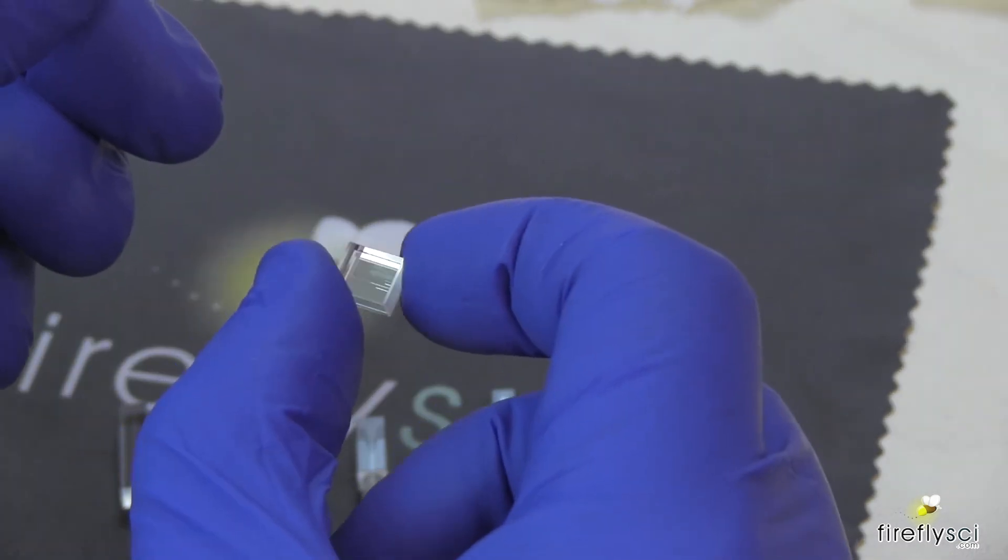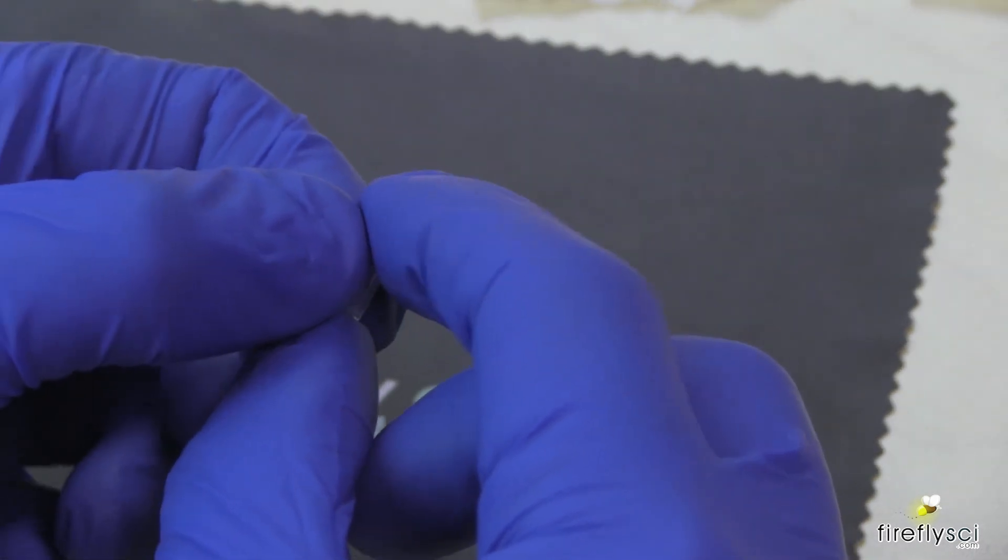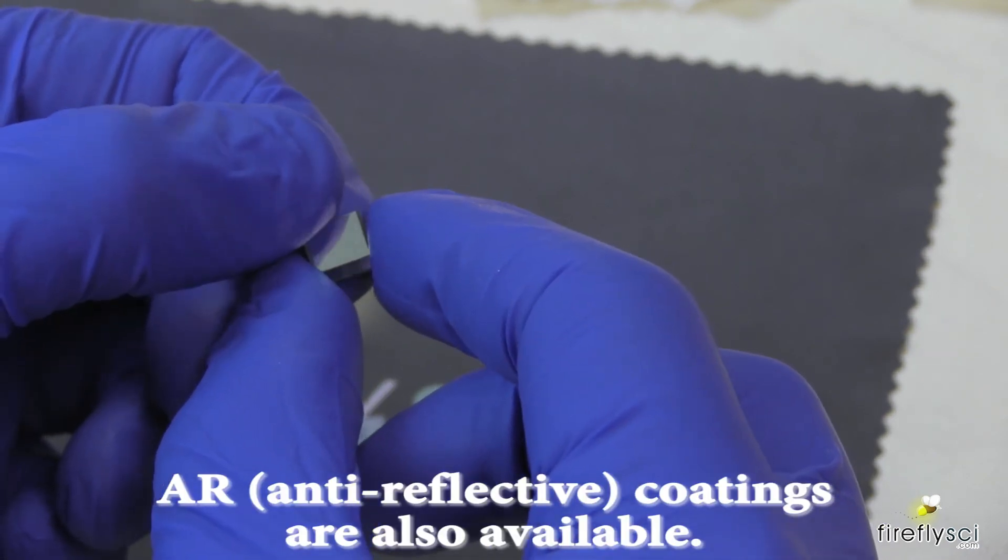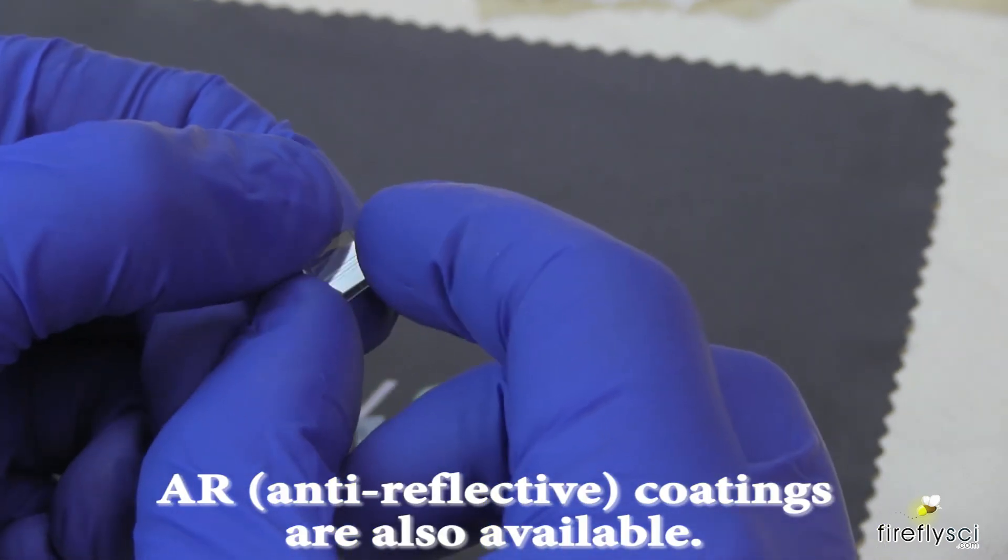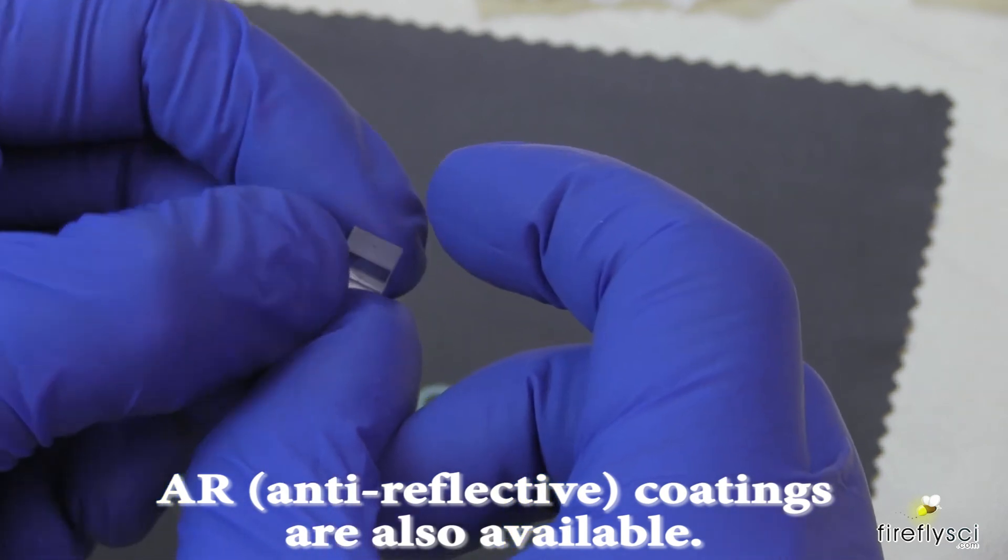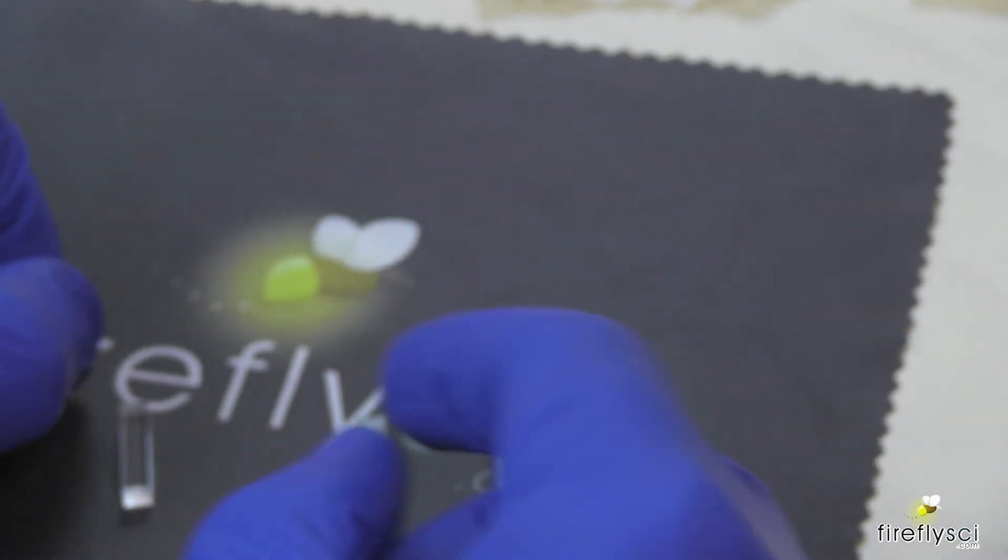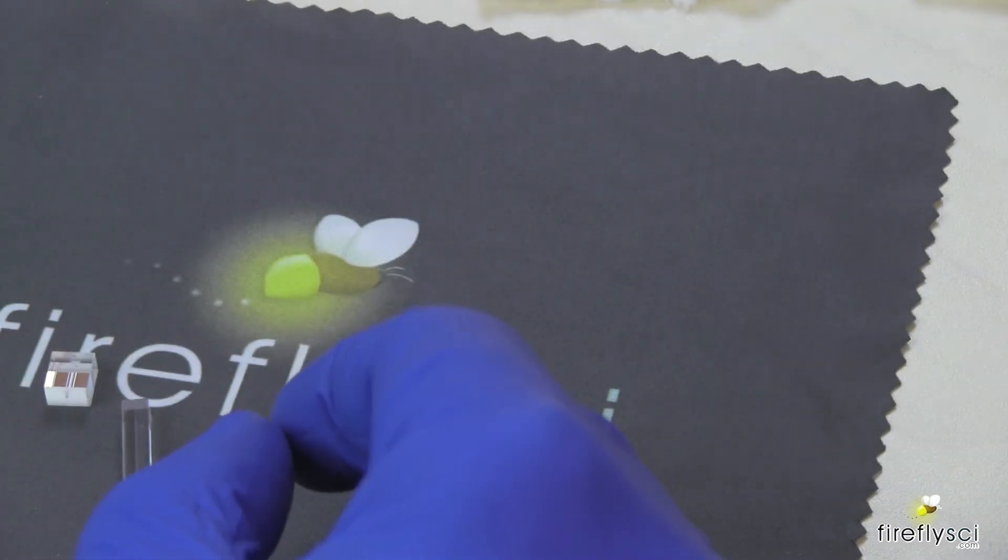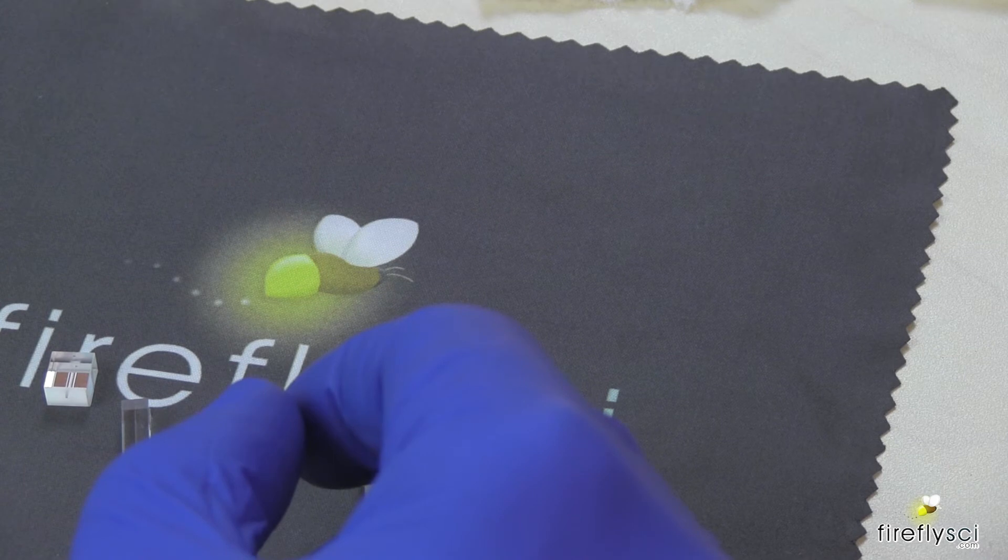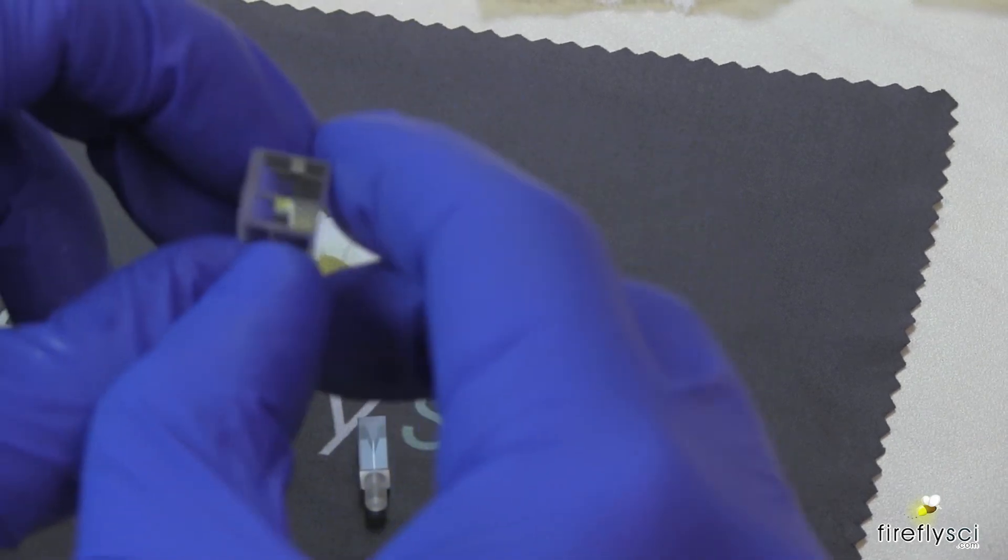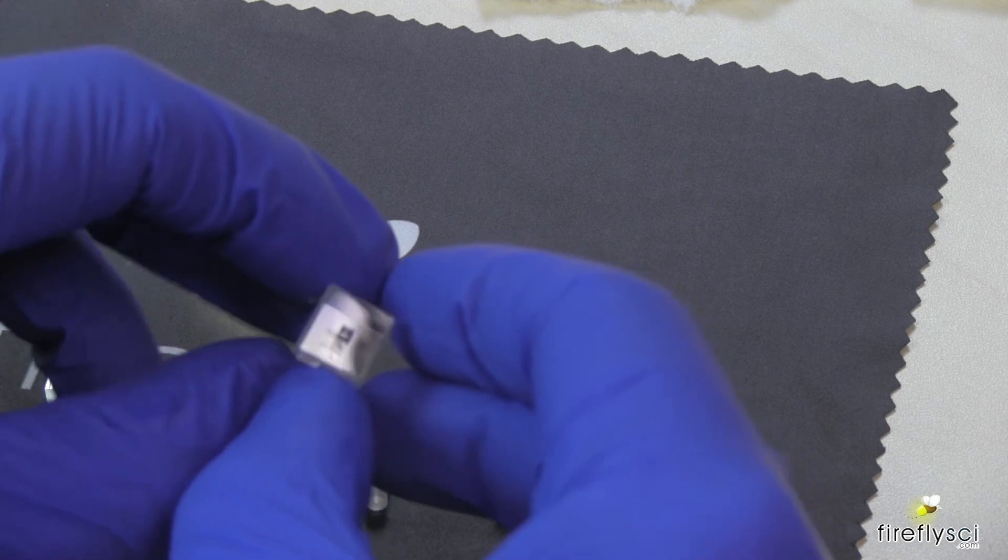This flow cell here has a mirror coating on the back. Some flow cells have frosted ends and some flow cells have the ends polished. Let me find a polished end one to show. There it is. This flow cell here has polished ends.